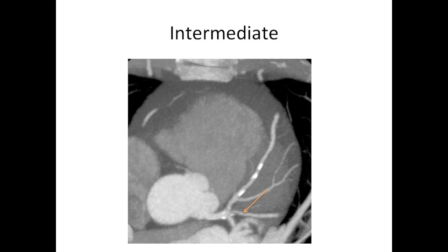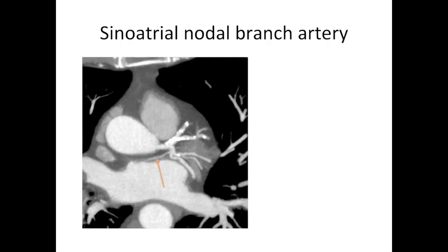There's another name to remember when it comes to coronary arteries: the intermediate branch, also called the ramus branch. It's one that's present in some people but not others. This is a branch in between the LAD and the circumflex — so instead of the left main stem dividing in two, in this case it divides into three, and the one in the middle is called the intermediate or ramus branch. Another little branch to remember is the sinoatrial nodal branch artery, which can come off the right or the left side.